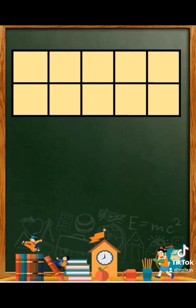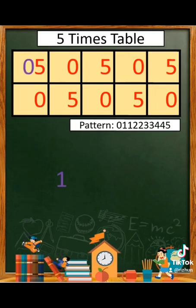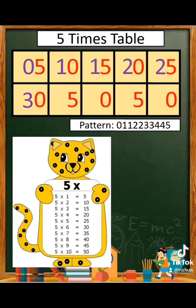For the 5 times table, let us draw 5 columns and 2 rows. This is so easy because we just have to put 5 and 0 inside the box. And then we add 0, 1, 1, 2, 2, 3, 3, 4, 4, and 5.